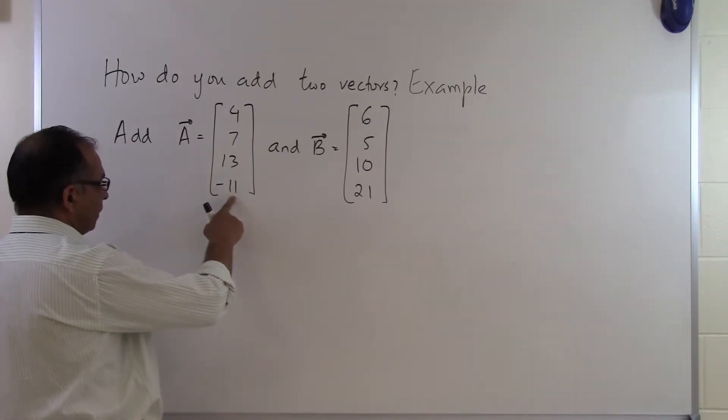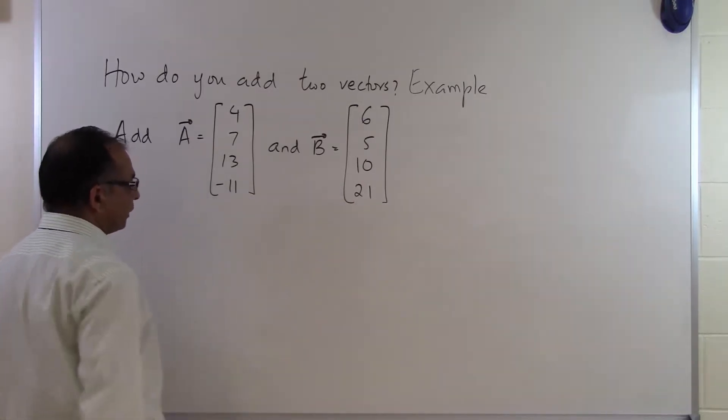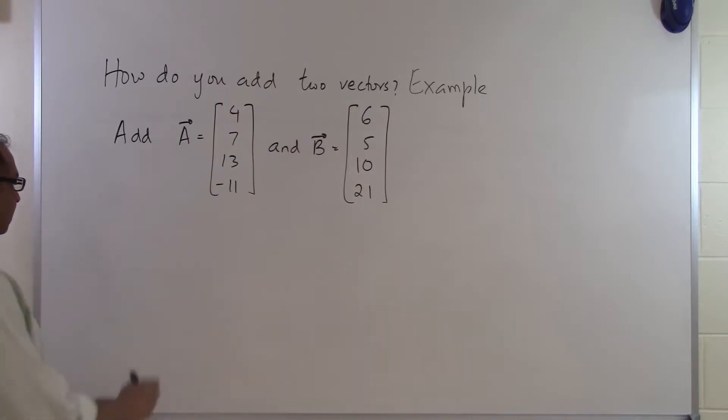So you've got four components here, four components here, a four-dimensional vector here, a four-dimensional vector here. So what we're going to do is we will be able to add these two.